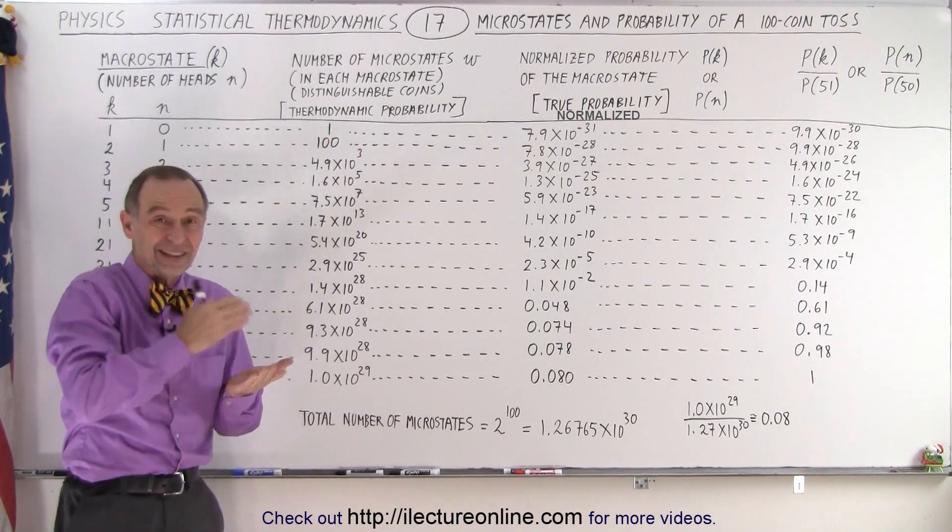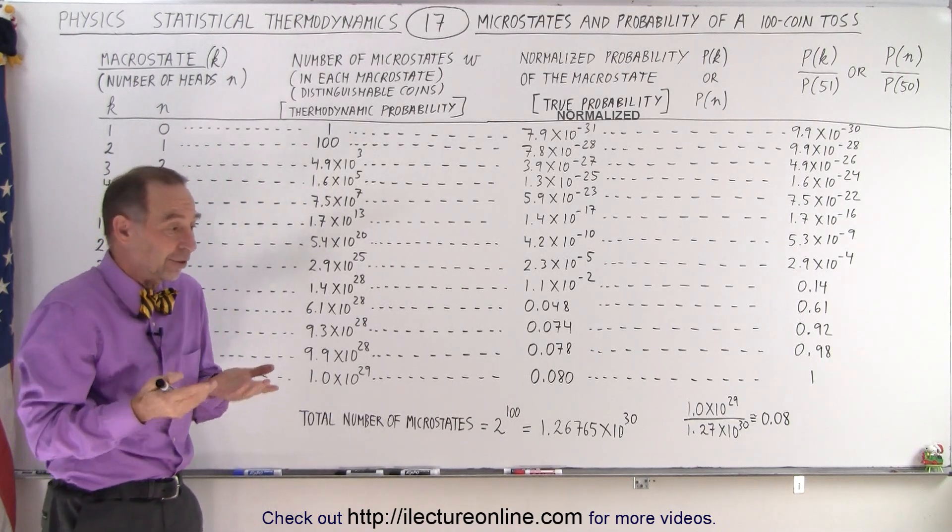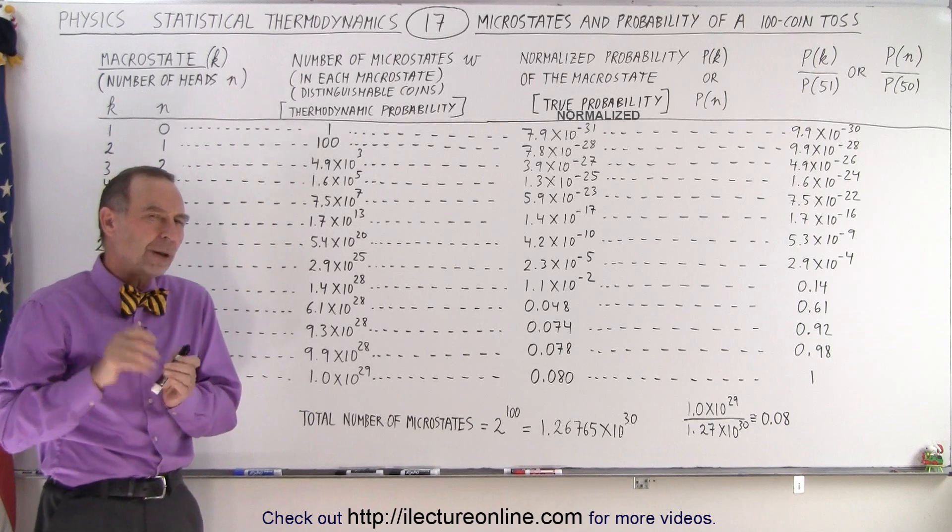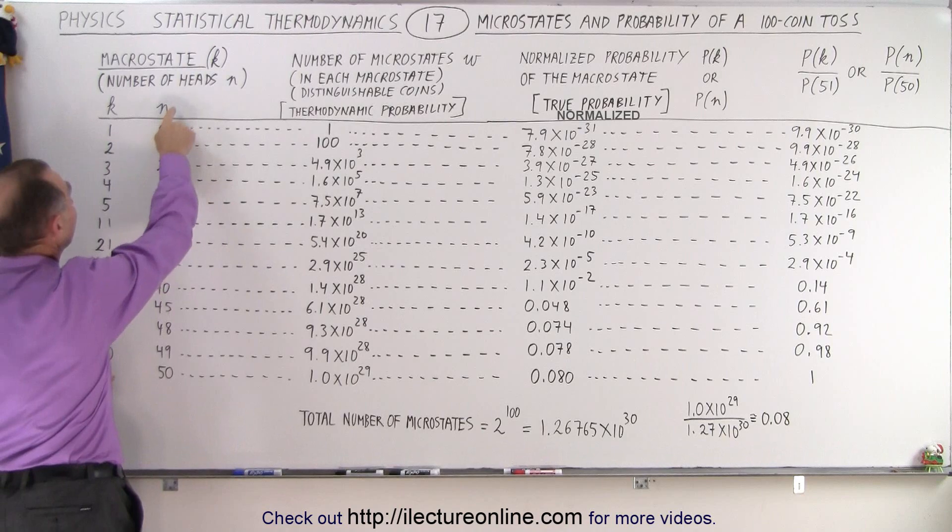And the reason for that is that we consider the coins to be distinguishable. That is really important. In other words, if the second coin is heads or tails, well that's different if the third one is heads or tails. For example, let's say we're looking for the probability that one coin will be heads. Well, here we look for that.